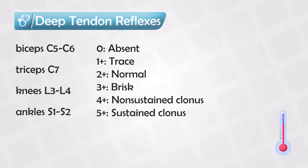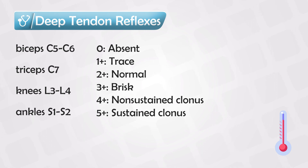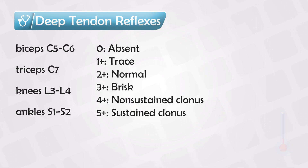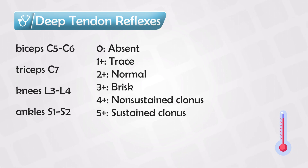You can finish your examination by testing the deep tendon reflexes. The biceps reflex tests the C5 to C6 nerve roots, the triceps reflex tests C7, the patellar reflex tests L3 to L4, and the ankle reflex tests S1 to S2. The scoring is: 0 for absent reflex, 1 for trace movement, 2 for normal, 3 for brisk, 4 for non-sustained clonus, and 5 for sustained clonus, which is a sign of motor sclerosis or a severe neurological issue.